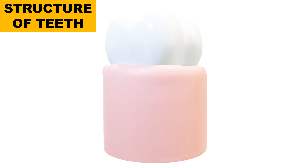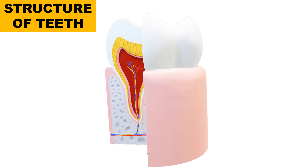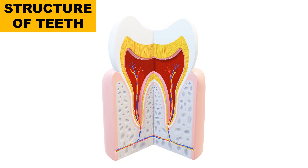Now regarding the structure of teeth, externally the tooth is embedded in the gum. The outer white portion is our tooth and the portion in pink color is the gum. Internally, the teeth structure is composed of the following parts.